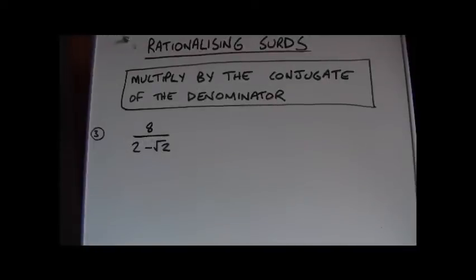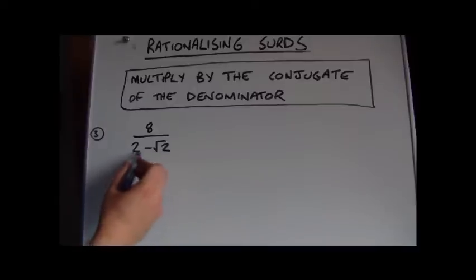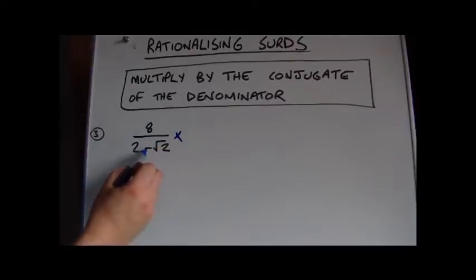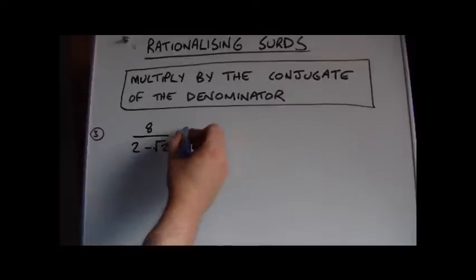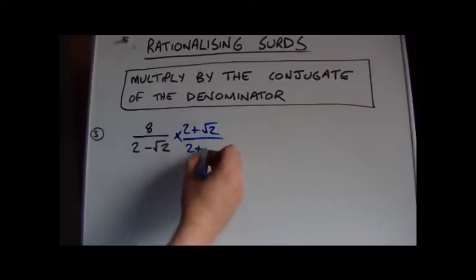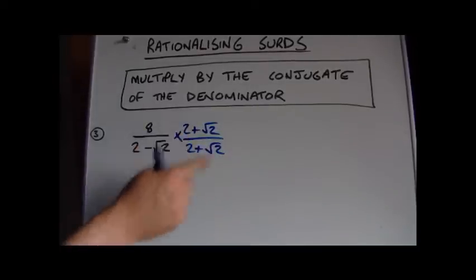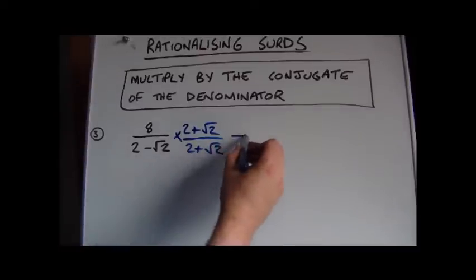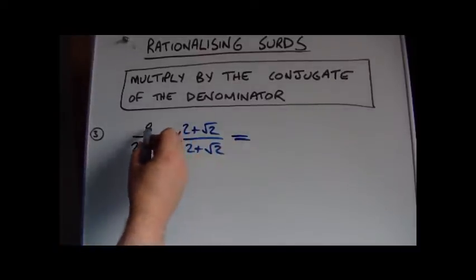With more complicated expressions like this one, the process for finding the rationalized form is a little different. We have to look at the denominator and multiply the top and bottom by the conjugate. The conjugate just means changing the sign to the opposite one — so if the denominator is 2 minus root 2, we change it to 2 plus root 2. Since we're multiplying by that over itself, the value is still 1, so we're changing the form but not the numerical value.